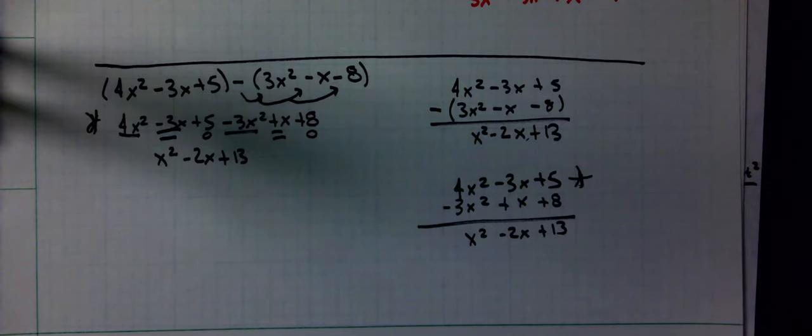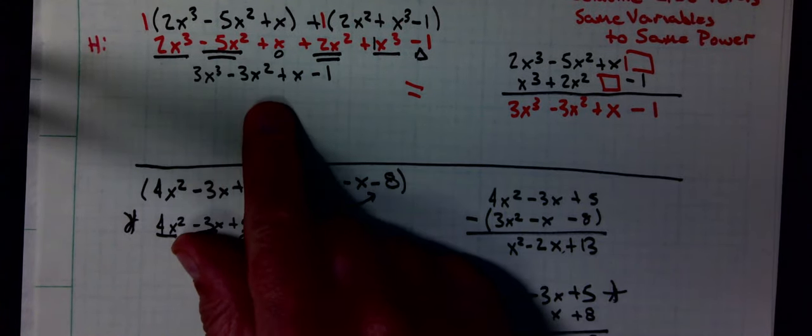That's all there is to finding the sum or difference of polynomials. Biggest thing is, don't combine x squareds with x's. Don't combine x cubes with x squareds.